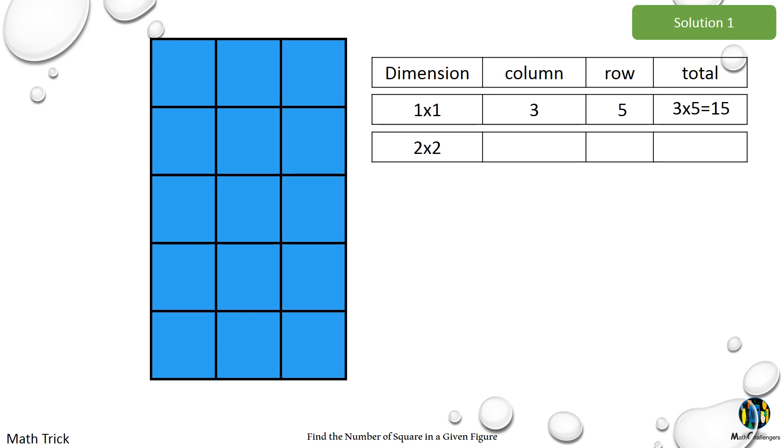Let's repeat the process for 2 by 2 squares. We have 2, 2 by 2 squares vertically and 4 horizontally. So there are 8, 2 by 2 squares in all.